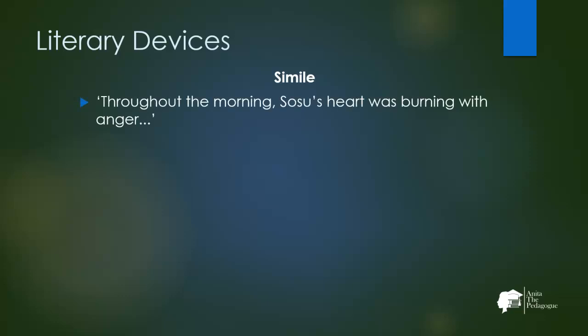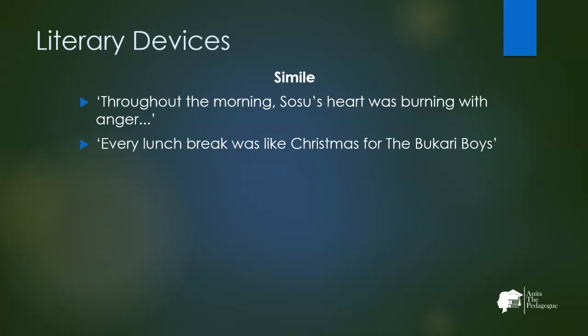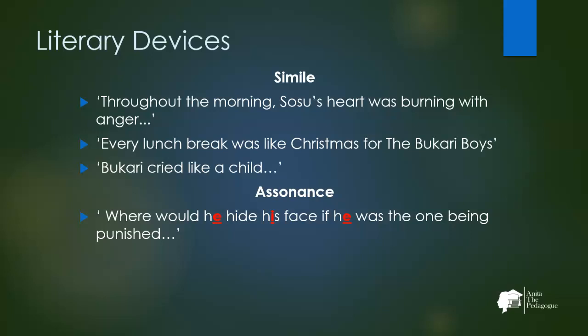Regarding literary devices, simile is a comparison of two or more ideas using 'as' or 'like.' Examples include: 'throughout the morning Sosu's heart was burning with anger,' 'every lunch break was like Christmas for the Bukhari Boys,' and 'Bukhari cried like a child.' Assonance is the repetition of vowel sounds in a string of words — for example, 'where would he hide his face if he was the one being punished' contains a repetition of the vowel sound 'e.' Alliteration is the repetition of the initial consonant sound — 'Bukhari Boys' repeats the sound 'b.'